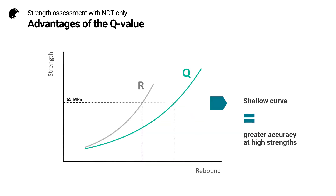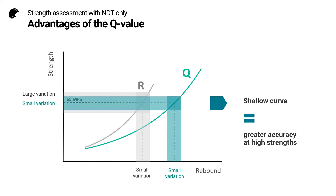The Q-value hammers have significant advantages — they have a much shallower correlation curve. With an R-value hammer, after about 50–60 MPa, the correlation curve becomes quite steep, so a small variation in the rebound value leads to a large variation in the strength estimation. With Q-value hammers, because of the shallow curve, a small variation in the Q-value leads to only a small variation in the compressive strength, giving greater accuracy at higher strengths.